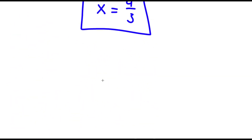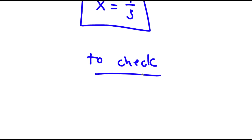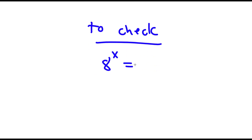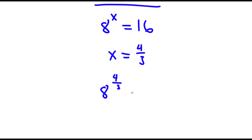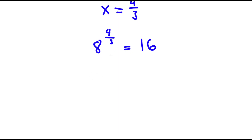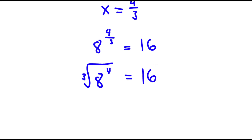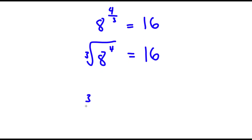Now, to check — my original equation was 8 to the power of x is equal to 16. So now that I know that x is equal to 4 over 3, I have 8 to the power of 4 over 3 is equal to 16. Now, 8 to the power of 4 over 3 is the same thing as the cube root of 8 to the power of 4, which equals 16. To solve this, I'm going to first get the value of 8 to the power of 4, and this is actually equal to 4,096.